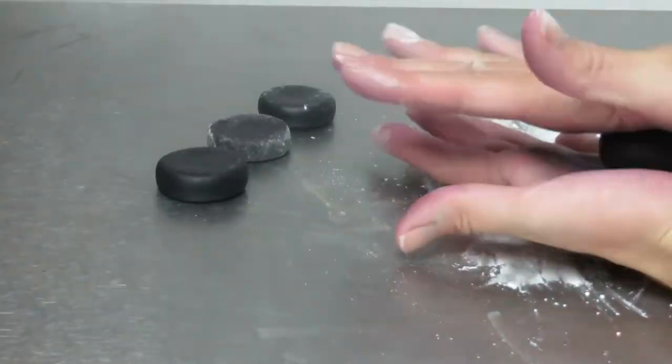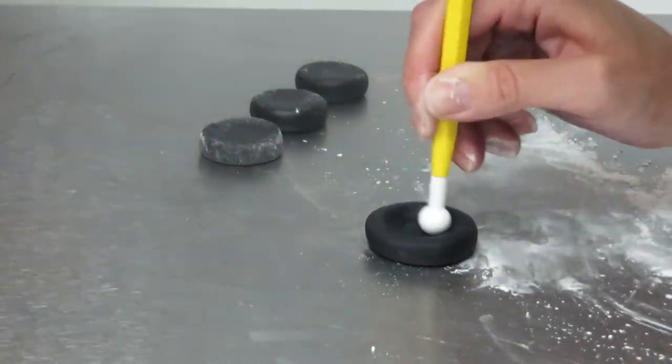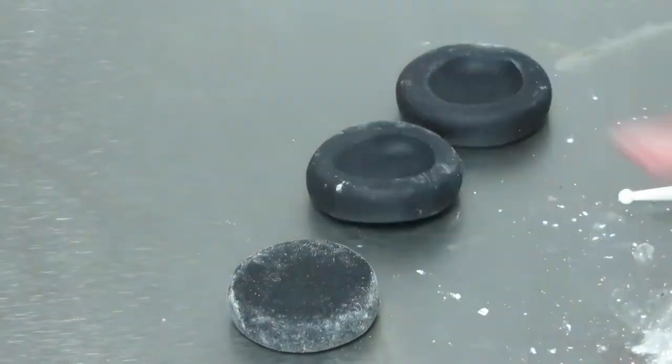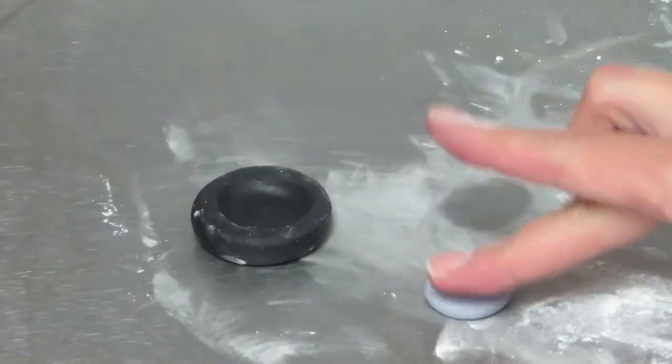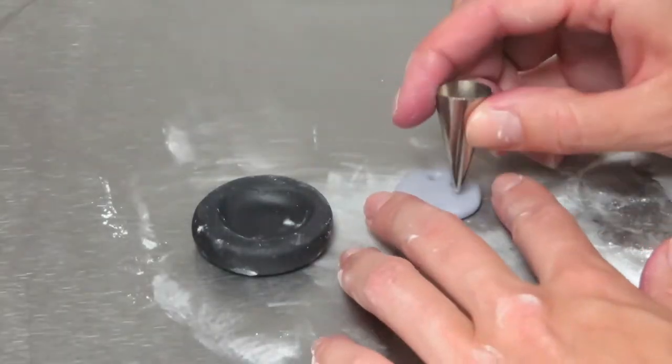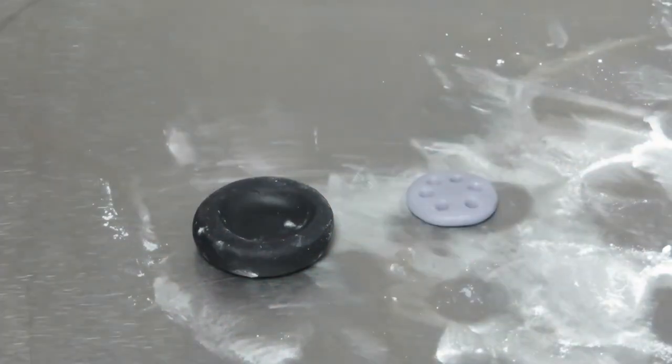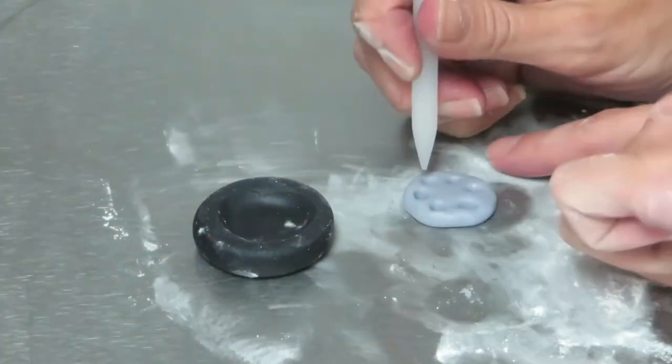These black discs of fondant will be the tires. I'm using my ball tool again to make an indent for the hubcap and a small round frosting tip to make little holes in the hubcaps and then widening them to make them triangles. If you have a triangle tool, great, you can use that.